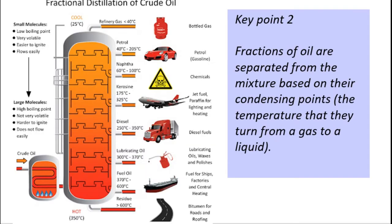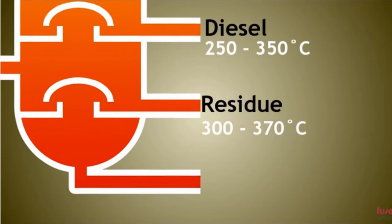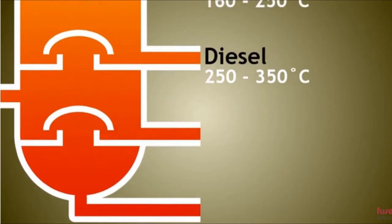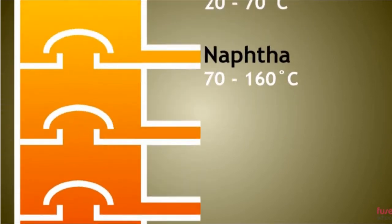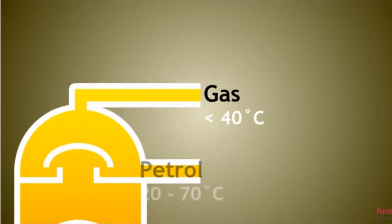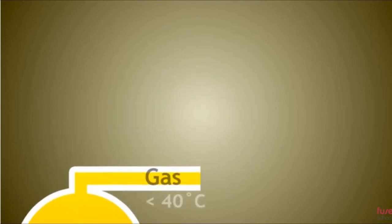Here's a fractional distillation column. Oil is pumped in at the bottom at 350 degrees C, so it's in the form of gas or vapor. As you move up the column there's a temperature gradient — hot at the bottom and cooler at the top. Different length hydrocarbons, or fractions, condense at different temperatures.